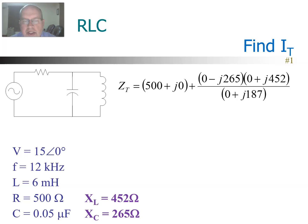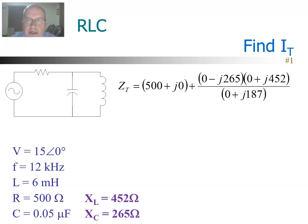The first parallel branch is the capacitor. The capacitor is a negative imaginary, so we'll write that as 0 − j265. And then the inductor is 0 + j452. Adding those together: 0 + 0 gives us 0, and −265 plus +452 gives us a positive 187.